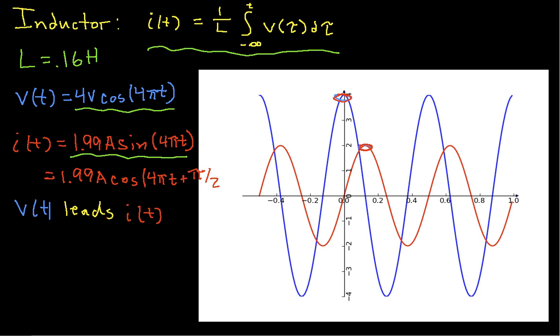So what we can say then is that i(t) is 1.99 amps cos(4πt + π/2). No, I'm sorry, I got that wrong. That should be minus π/2. Let's correct that immediately. Minus π/2. And because the phase shift here is negative, that says the current lags the voltage. Again, you can also see it graphically. So we can write then that i(t) lags v(t). Again, for an inductor, the current and the voltage are 90 degrees out of phase with each other, but they're the opposite phase angle as with the capacitor.